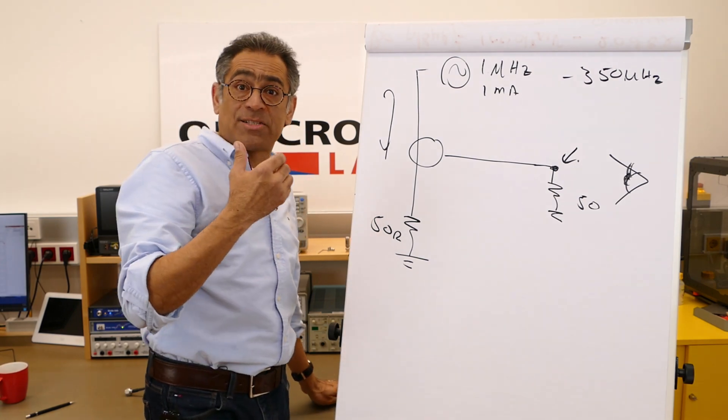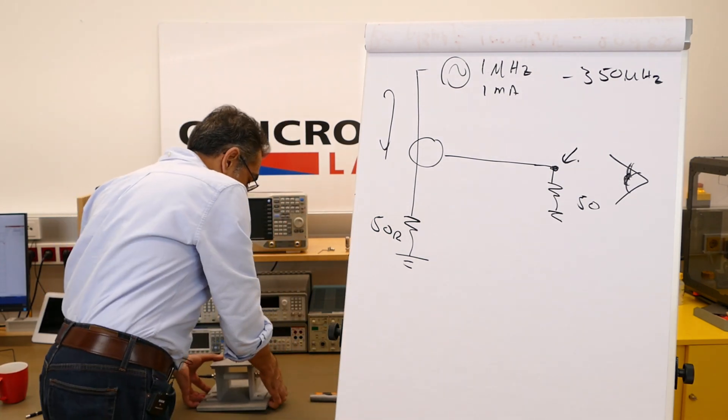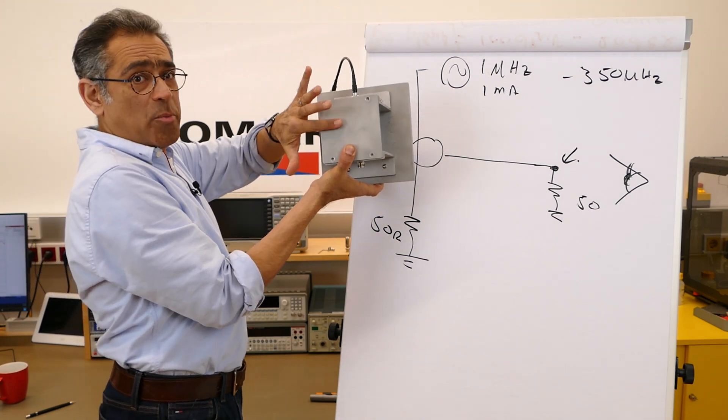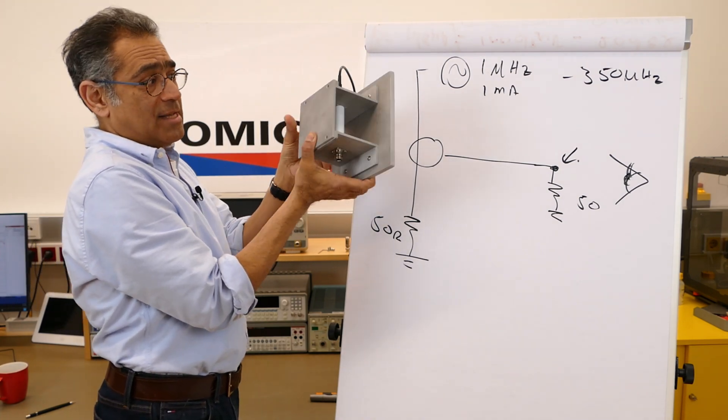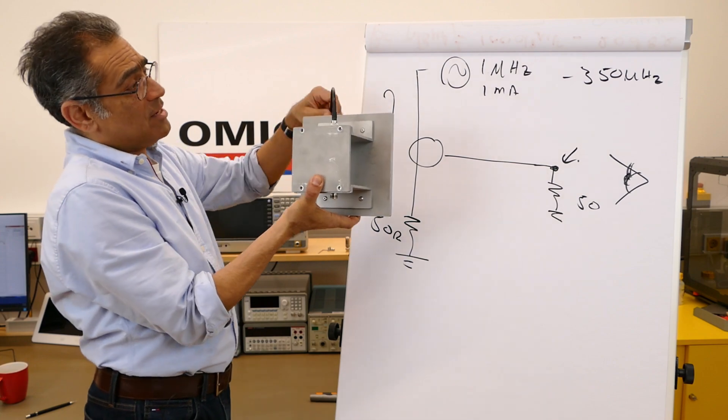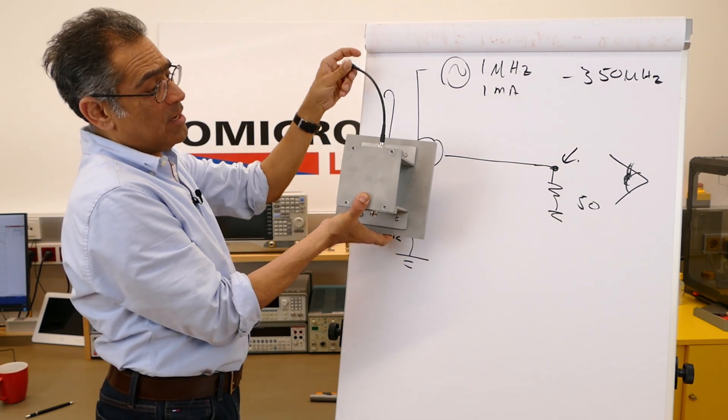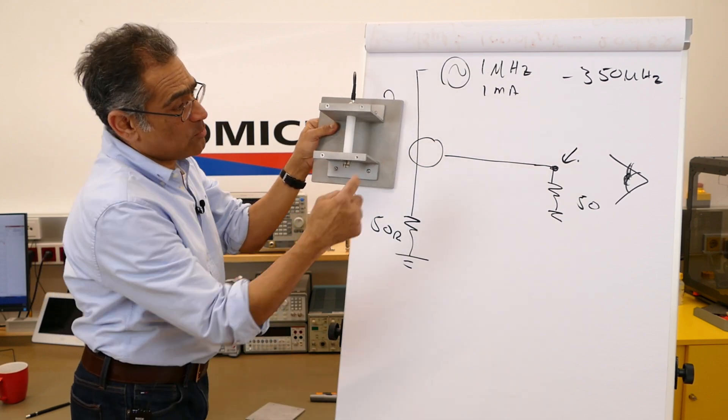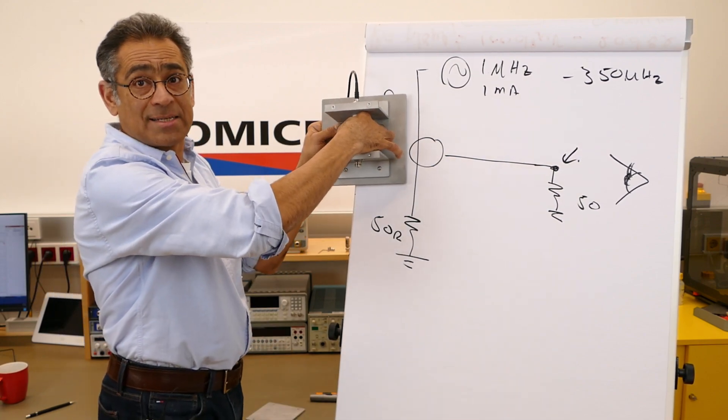And it looks something like this. Now I've unscrewed the top off so that we can see what's inside of the test fixture. Right, so here is that cable that is going in, and then if I take the top off, this is where the current clamp is going to sit.